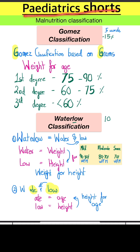Today in Pediatric Shorts we have two important classifications for malnutrition. First is Gomez classification and second one is Waterlow classification.